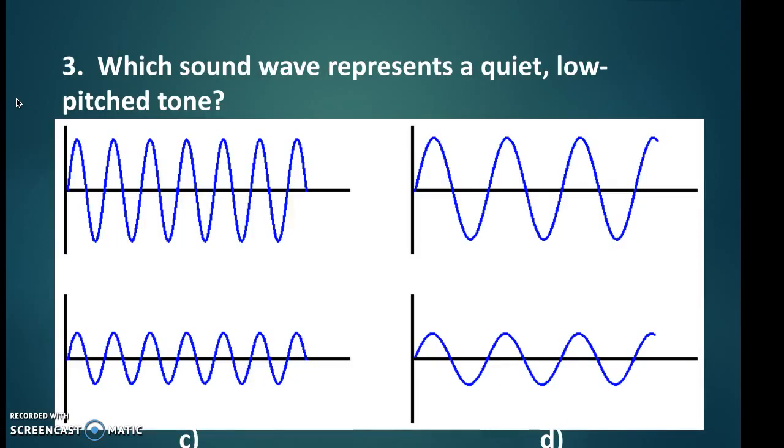Which sound wave represents a quiet, low-pitched tone? This would be A, B, C, and D, which would be quiet and low-pitched. It would be D. It's quiet because it has a smaller amplitude. It's a lower pitch because the frequency is lower as compared to that one.